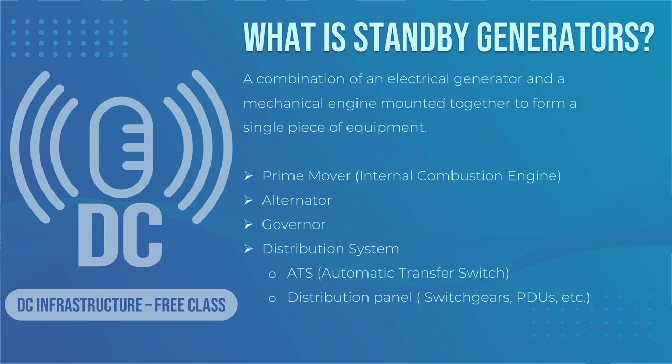The components of a generator include the prime mover, the alternator, the governor, and the distribution system. The distribution system is made up of several subcomponents which include the automatic transfer switch (ATS), switchgear, switchboards, distribution panels, and more. In many instances, generators also include a fuel tank and are equipped with a battery and electric starter.